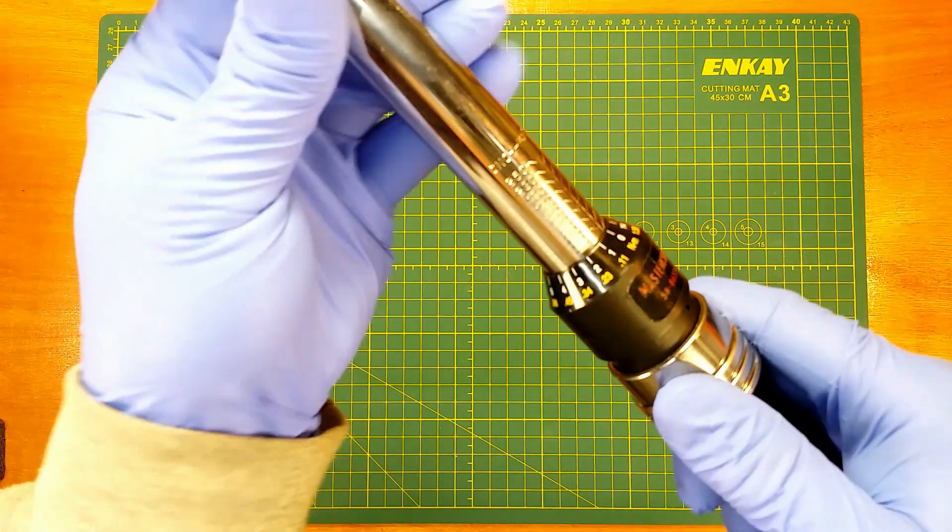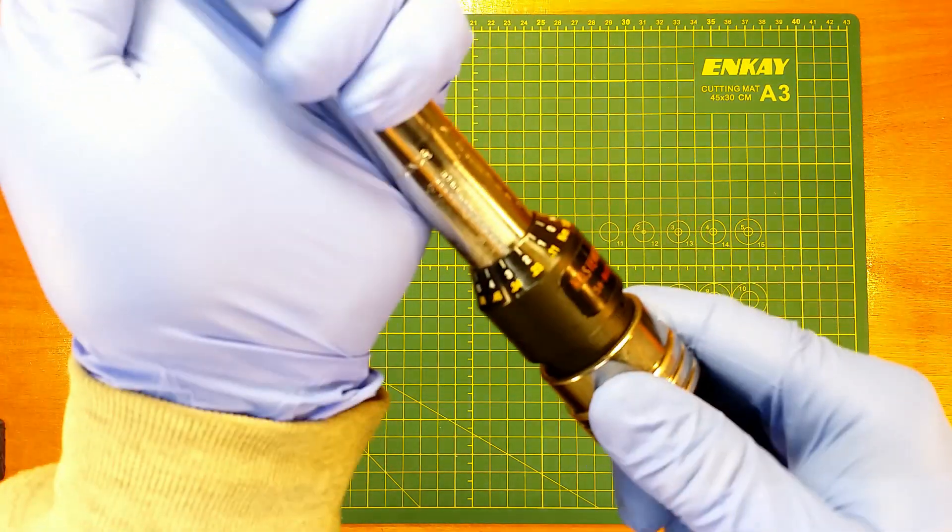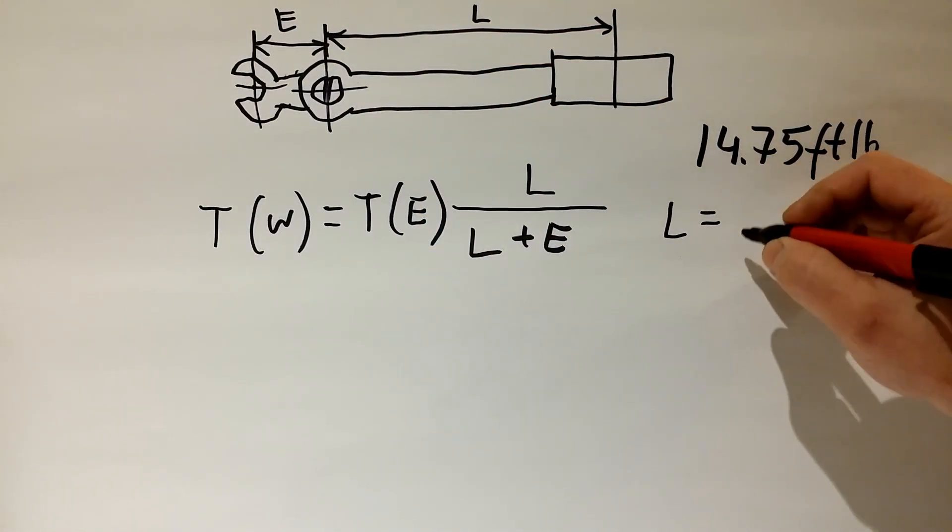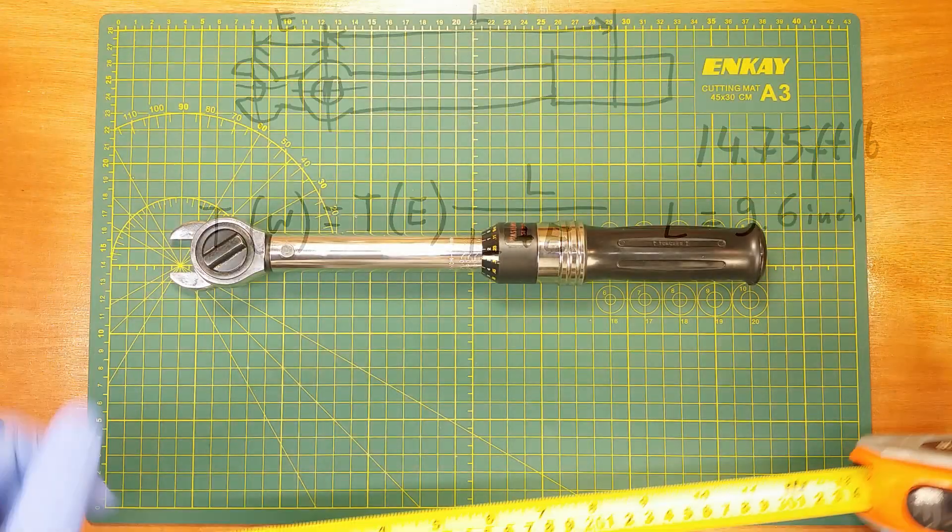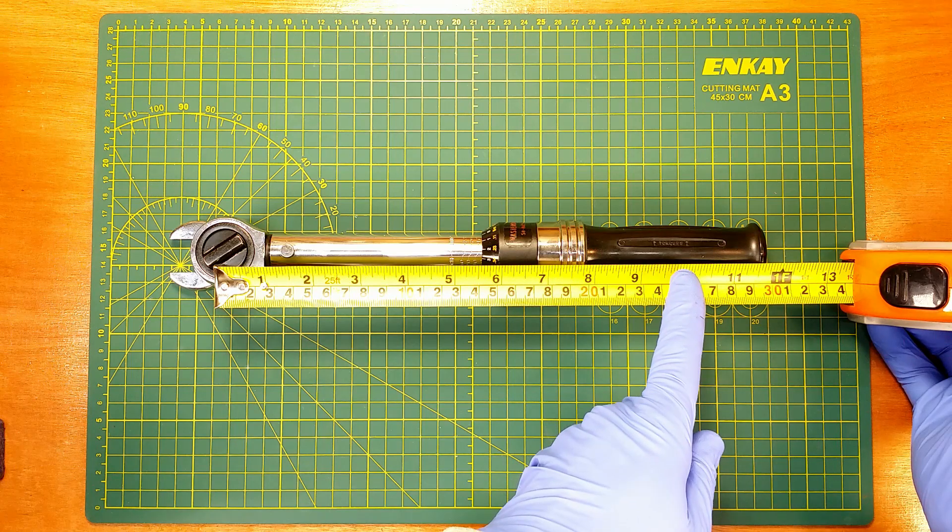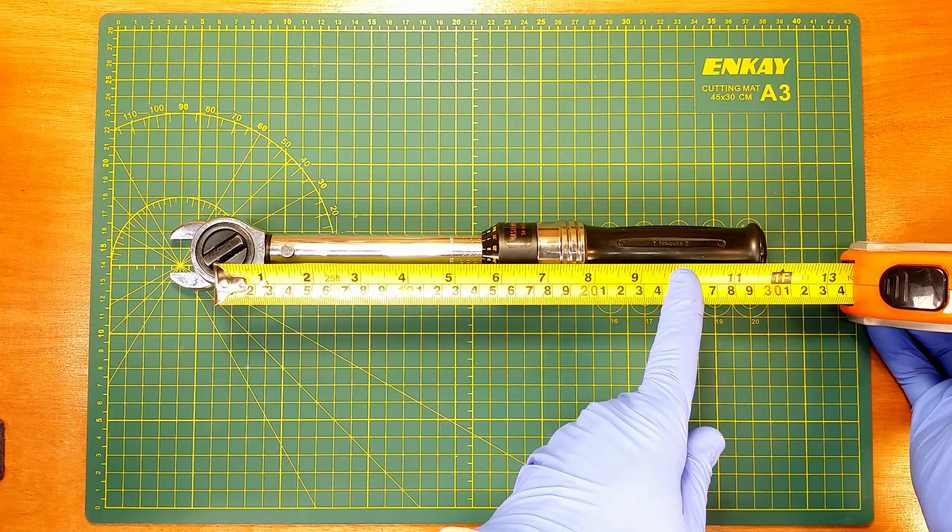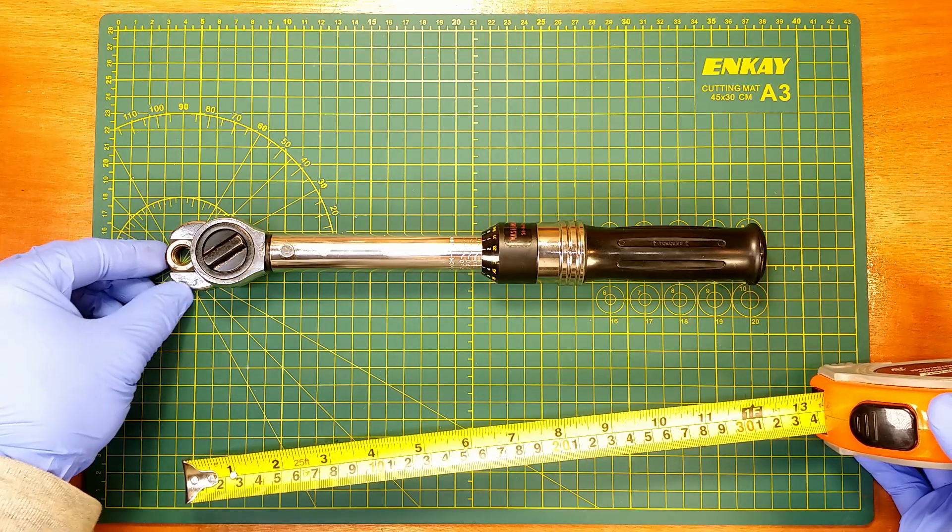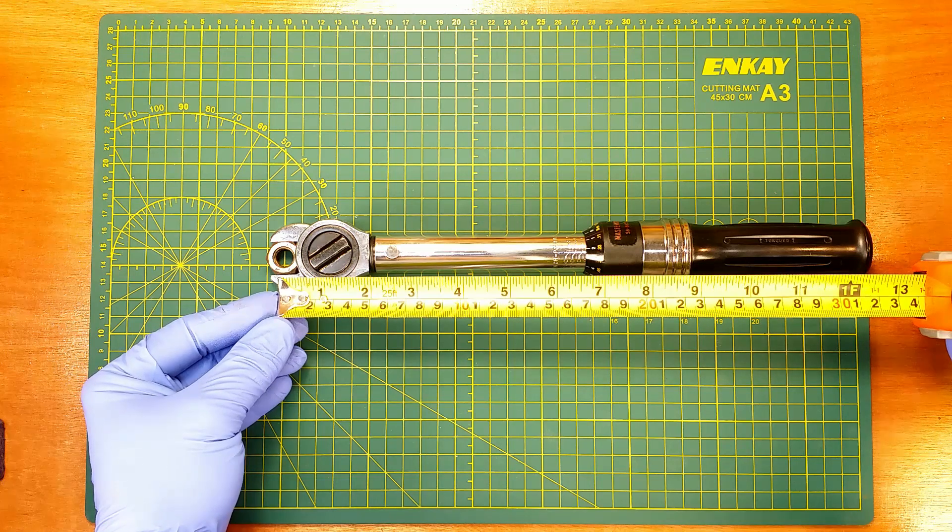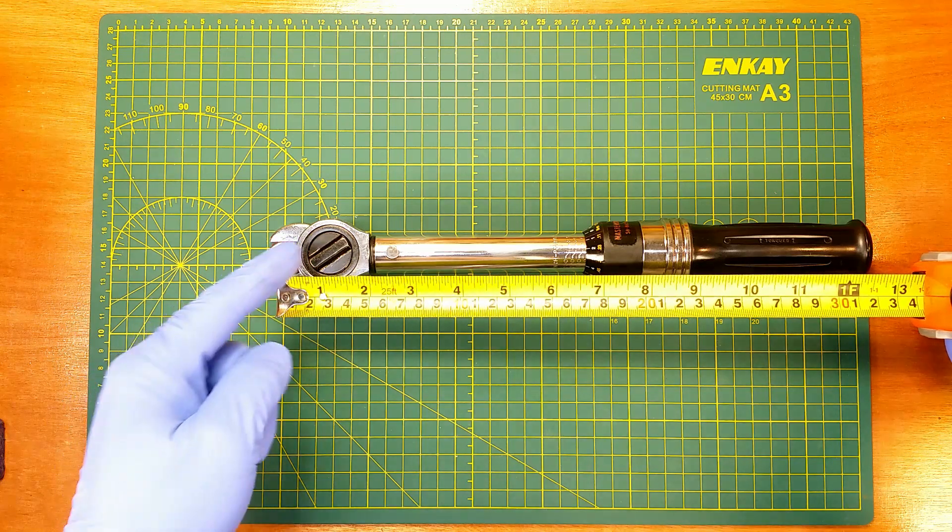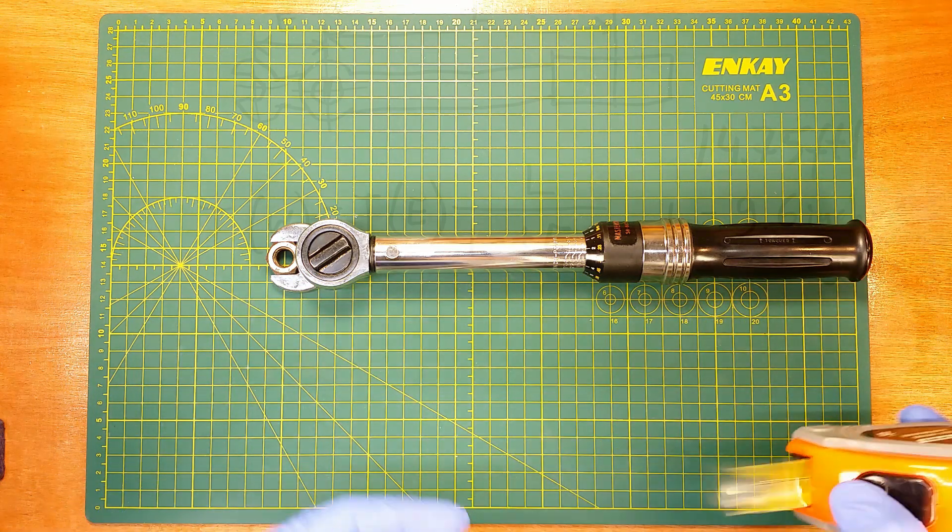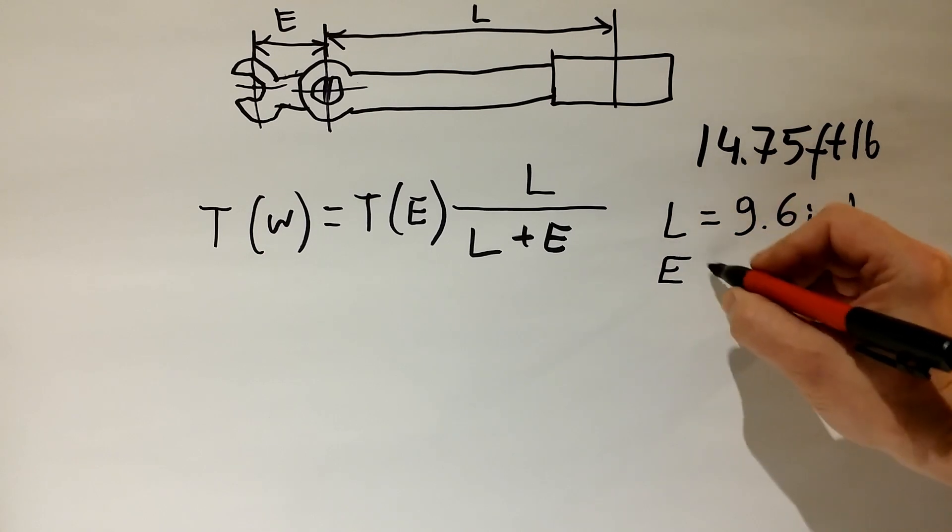For example, I have the wrench set to 14.75 ft-lb. L is 9.6 inches. The distance L we measure between the axis of rotation of the wrench and the middle of the handle, where we apply force. The distance E is measured between the axis of rotation of the bolt, or nut, and the axis of rotation of the wrench. That is actually not rotating with the extension. And E is 1.1 inch.